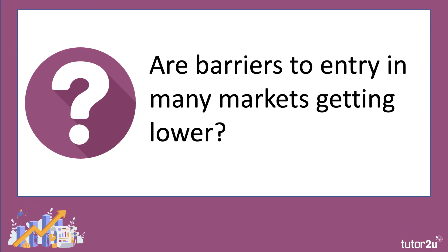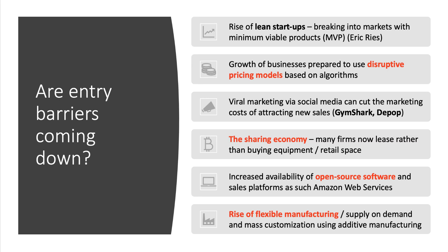Some economists argue that barriers to entry in many industries are getting lower. One reason is the rise of lean startups — Eric Ries wrote the book on this called 'The Lean Startup.' These businesses try to operate with a minimum of cost and aim to get a minimum viable product, like an app, onto the market as soon as possible to see the reaction to it.